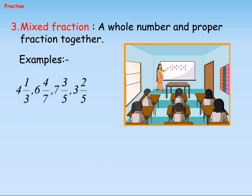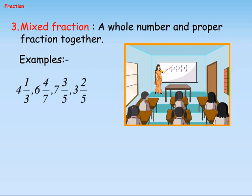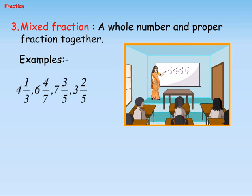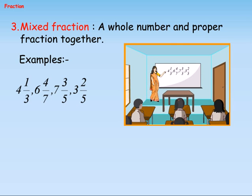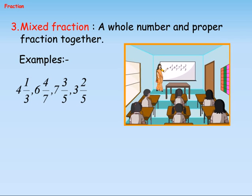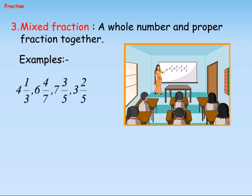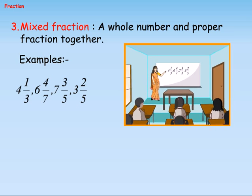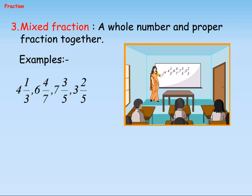Type three: Mixed fraction — a whole number and a proper fraction together. Examples: 4 and 1/3, 6 and 4/7, 7 and 3/5, and 3 and 2/5.